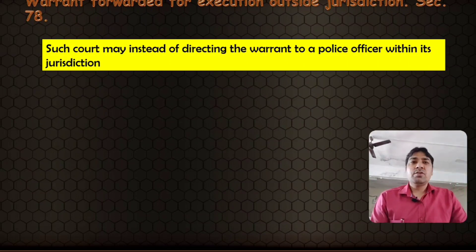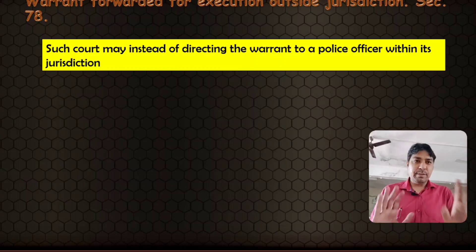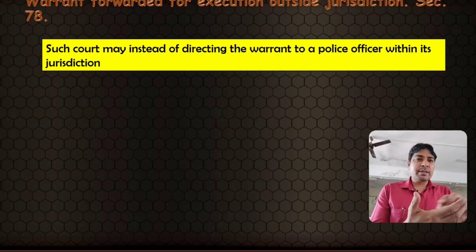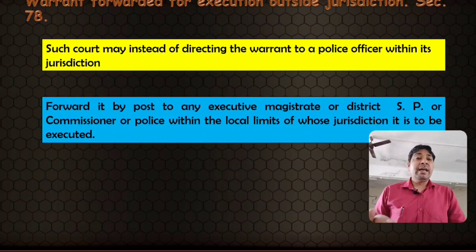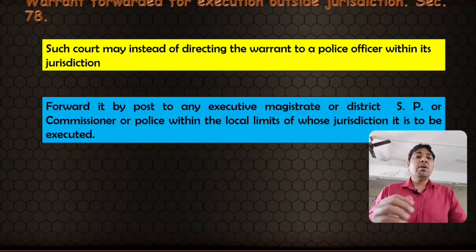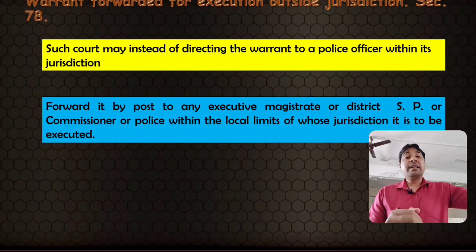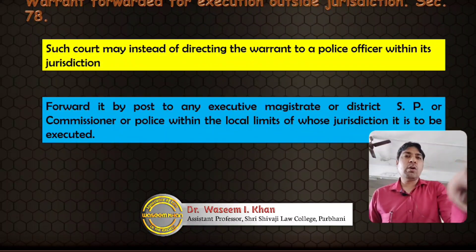Now Section 78 — the court may instead of directing the warrant to a police officer within its jurisdiction, forward the warrant by post to an executive magistrate, or district superintendent of police, or commissioner of police within the local limits of whose jurisdiction it is to be executed. For example, if a court in Maharashtra needs to arrest an accused in Kerala, the Maharashtra court can send the warrant by post to the executive magistrate, superintendent of police, or commissioner of police in Kerala.